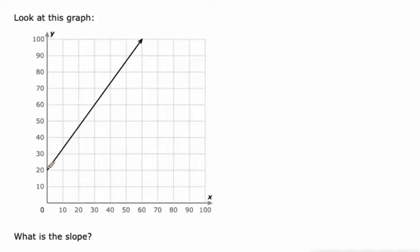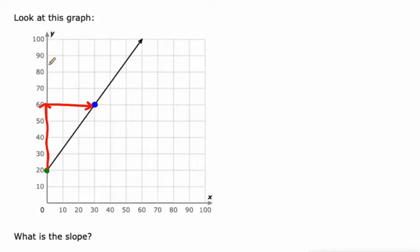So I might look at this Y-intercept here that's sitting at 20, and I might see this next point on the graph right here that's at 30, 60. The slope of this graph would be how much it goes up from one point to the other divided by how much it goes to the right. Some people say rise over run, or change in Y over change in X. So this goes from 20 to 60, that's a change of 40, and the X values go from 0 to 30, so that's a change of 30.